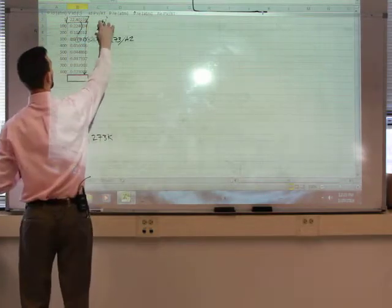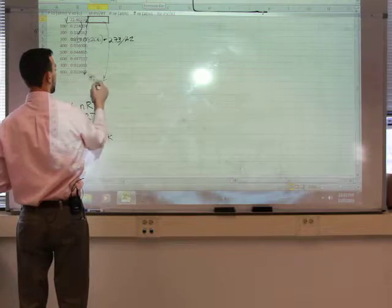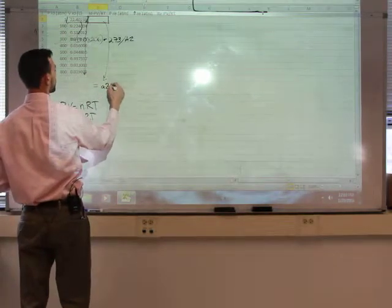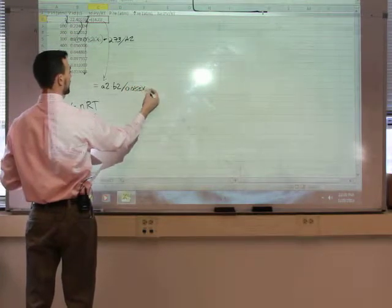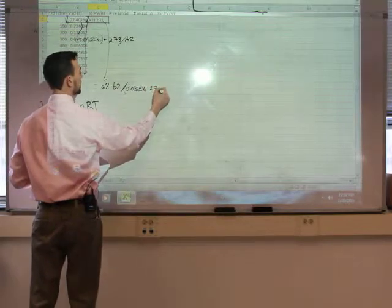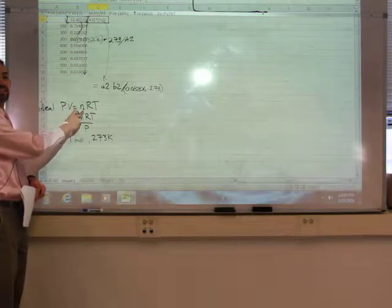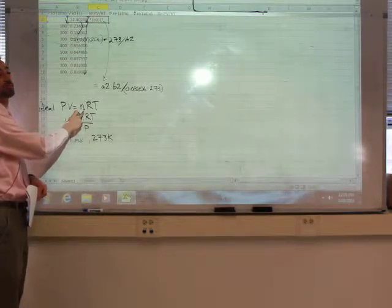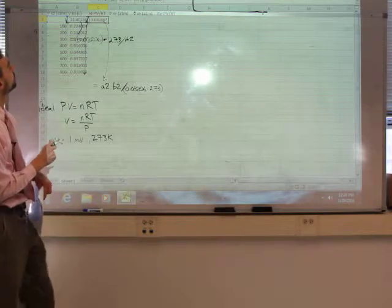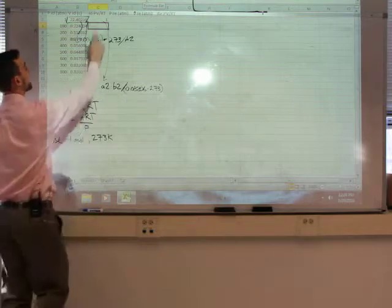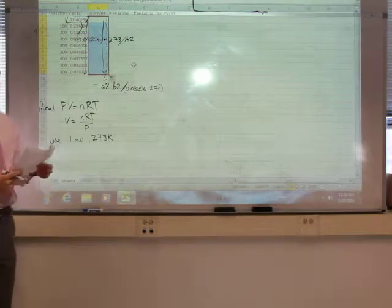Now, in the next column over here, you are directed to take the ratio of pressure times volume, divided by R and T. So this would be equals A2, your pressure, times B2, volume, divided by 0.08206, times 273. Now what's this really? That should really just be N, how many moles of gas you have. So this whole column should equal 1. It won't be much interest, but this is setting the stage for something we do later on. And then go ahead and fill that column down as well. Okay, 1, 1, 1, 1, not very exciting, right?